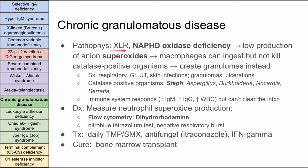Now we're in the phagocytosis disorders. Starting with chronic granulomatous disease — it's X-linked recessive, a deficiency in NADPH oxidase, leading to low production of superoxide anions. The macrophages can ingest but cannot kill catalase-positive organisms. Instead they form granulomas — a massive collection of macrophages. Symptoms include respiratory, GI, urinary tract, and skin infections, with granulomas and ulcerations throughout. The most common organisms are catalase-positive: Staph, Aspergillus, Burkholderia, Nocardia, and Serratia. The immune system is still responding, so IgG, white blood cell counts are normal, but they still can't clear the infection.